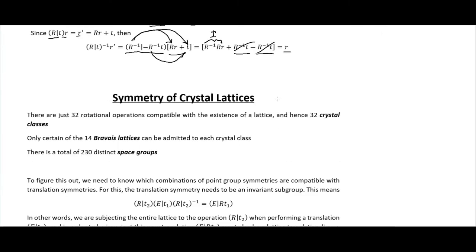Now we can apply this to the symmetry of crystal lattices. There are just 32 rotational operations compatible with the existence of a lattice, and hence 32 crystal classes. Only certain of the 14 Bravais lattices can be admitted to each crystal class, and we find a total of 230 distinct space groups — that's adding things like screw axes and glide planes, which I'll get into in a future video.